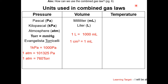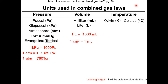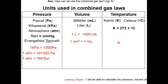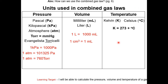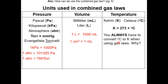The units of temperature are Kelvin and Celsius. To convert between Kelvin and Celsius, we use the equation: Kelvin equals 273 plus Celsius. This equation is on Table T on your reference table. You always have to convert from Celsius to Kelvin when using the gas laws.